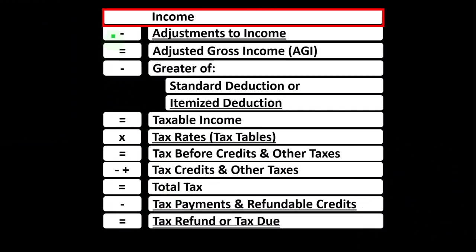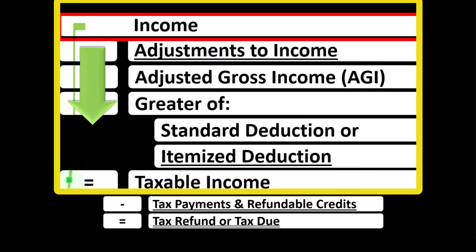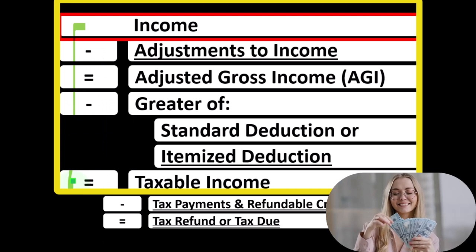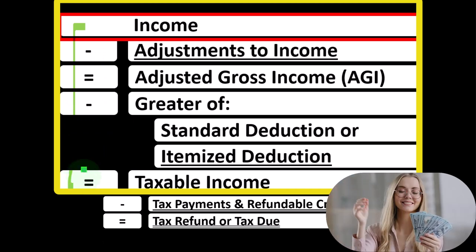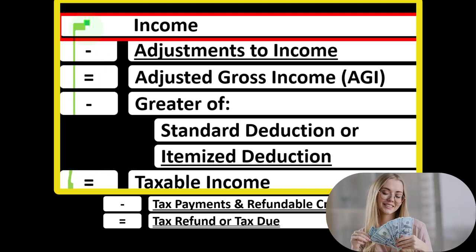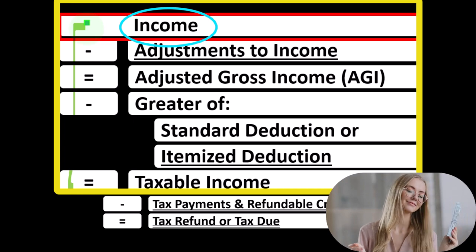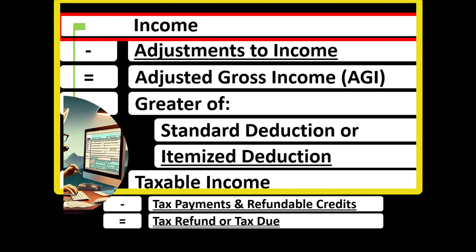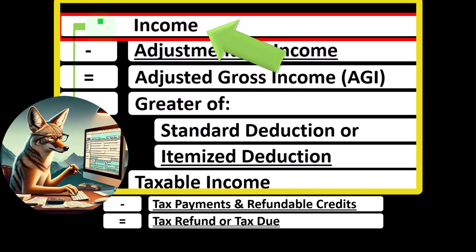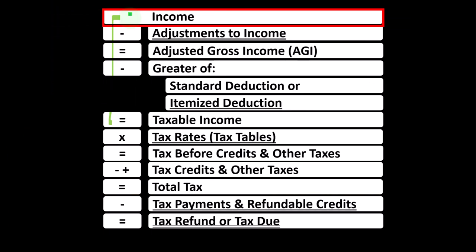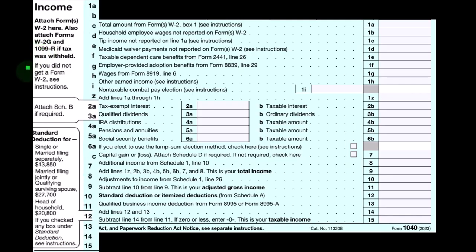Looking at the income tax formula, we're focused on line one income. The first half of the income tax formula is, in essence, a funny income statement. Normally an income statement has income minus expenses resulting in net income. For taxes, we've got income minus various deductions getting to taxable income. We'd like to exclude income from the equation, having taxable income as low as possible, resulting in less taxes. We also have to be aware that certain types of income have favorable tax rates, such as qualified dividends and possibly some capital gains.